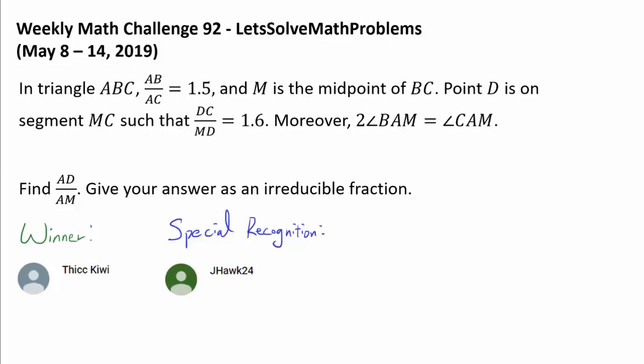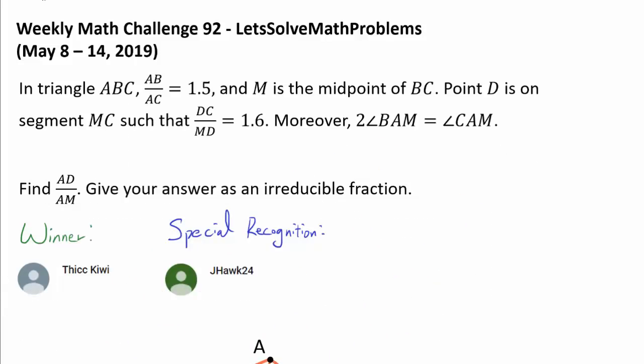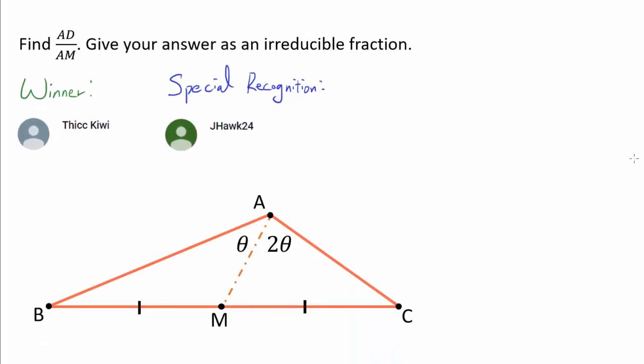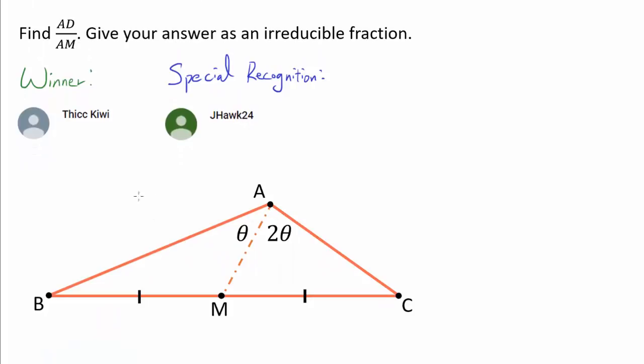If you're ready for a lot of computational geometry, this weekly math challenge 92 may be a perfect problem for you. So let's begin by reading the problem. In triangle ABC, we have the ratio from AB to AC being 1.5 and M being the midpoint of BC. Here is a diagram in the thumbnail that's going to facilitate the explanation. We see that AB is longer than AC and the ratio is 1.5, but it's better to work with integers if possible. So let's label AB to be 3x and AC to be 2x.